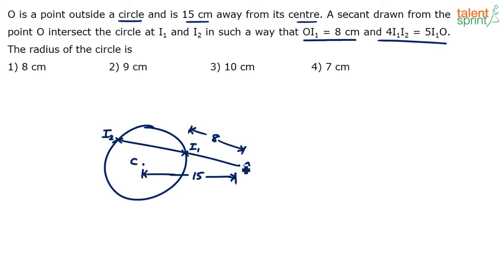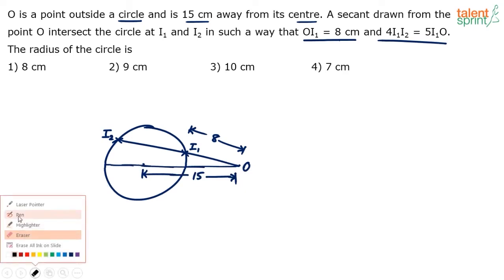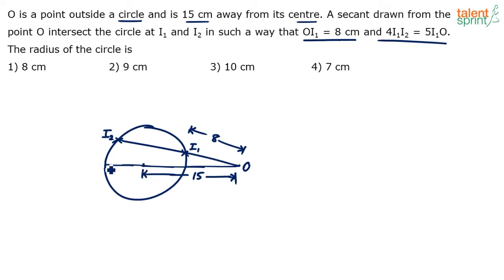Let's draw a line from point O passing through the center of the circle. This line segment passing through the center is the diameter, let's call it AB, where C is the center. So AC equals R and CB also equals R, since the radius is the distance from the center to any point on the circle.